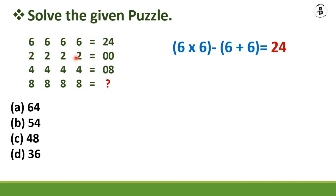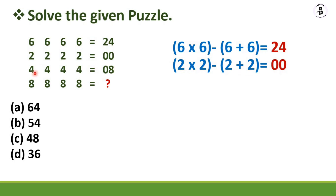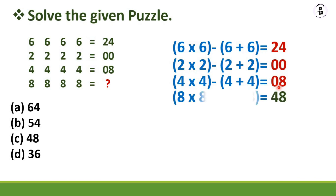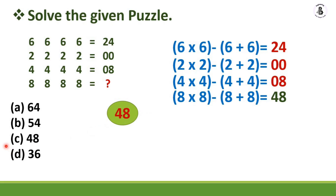Now apply for the third row: 4 multiply by 4 equals 16, then subtract 4 plus 4 which is 8, so 16 minus 8 equals 8. For the last one: 8 multiply by 8 equals 64, then minus 8 plus 8 which is 16, so 64 minus 16 equals 48. So 48 is my right answer for this puzzle, and from the options, Option C is my right answer.